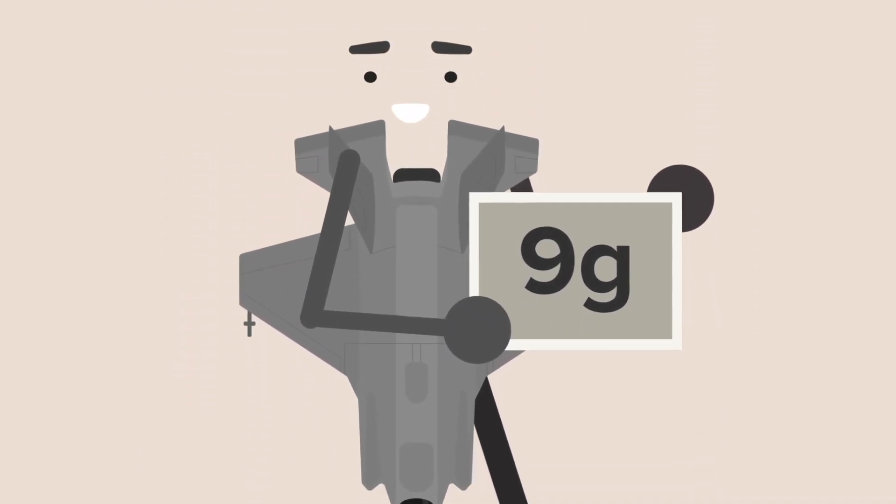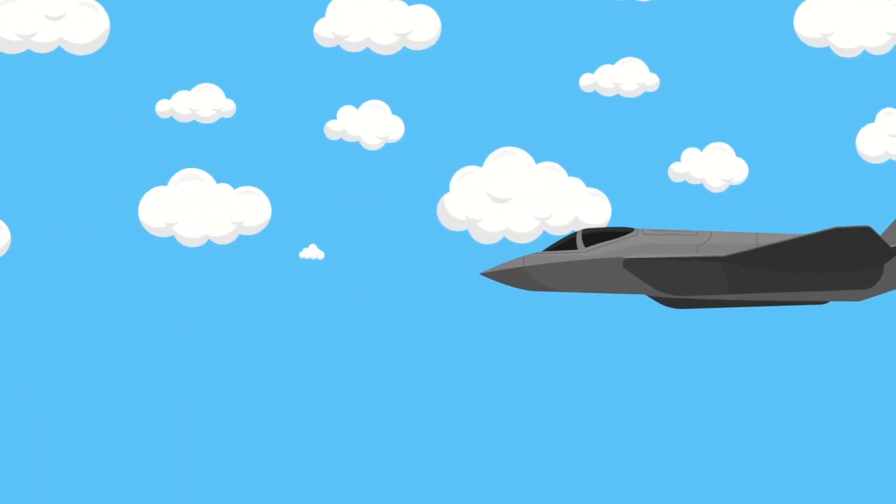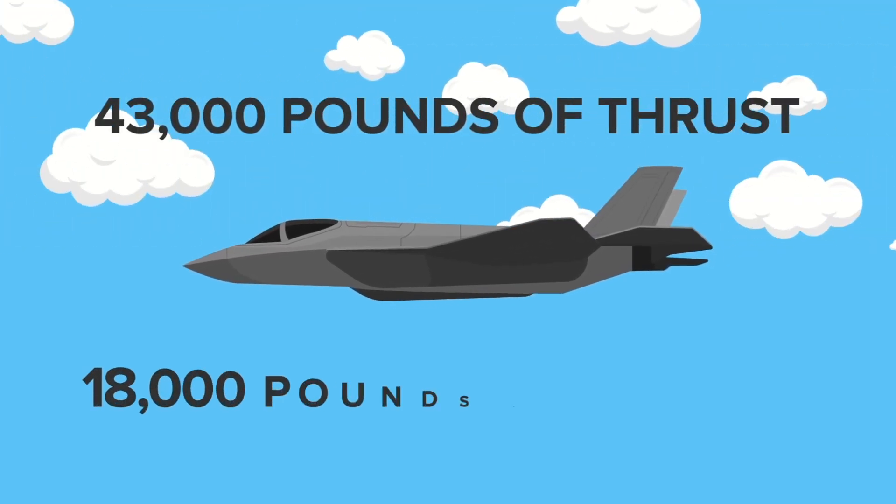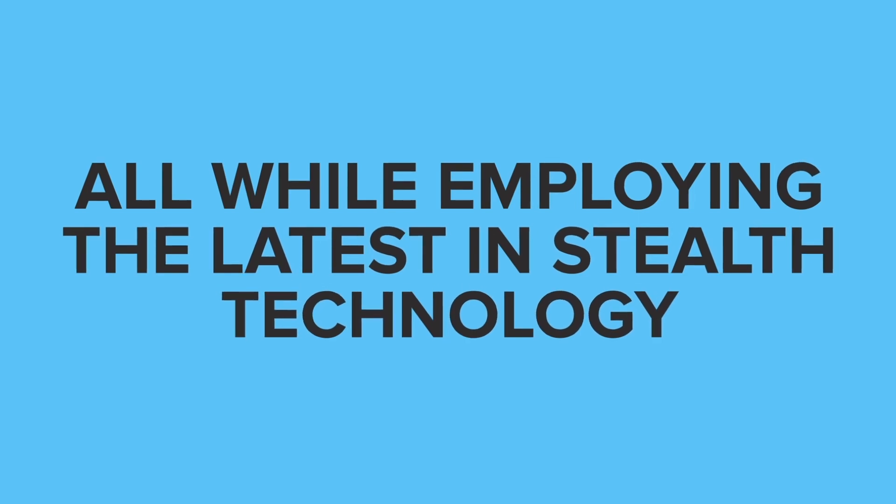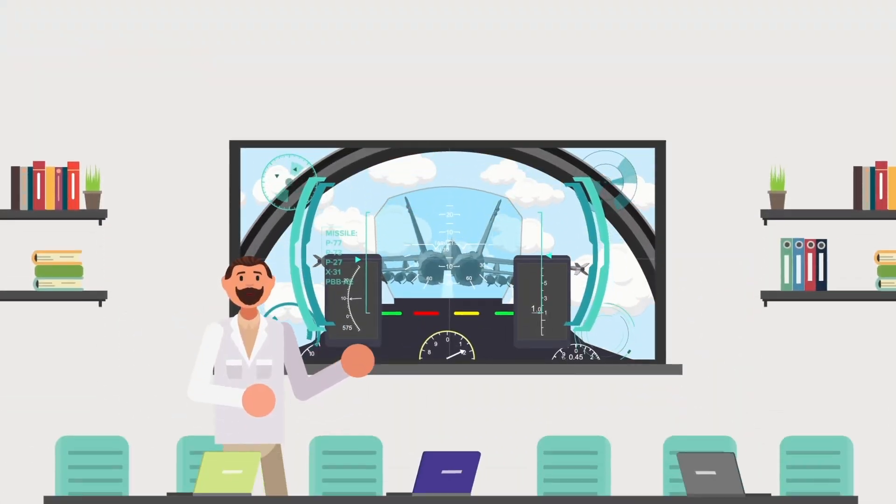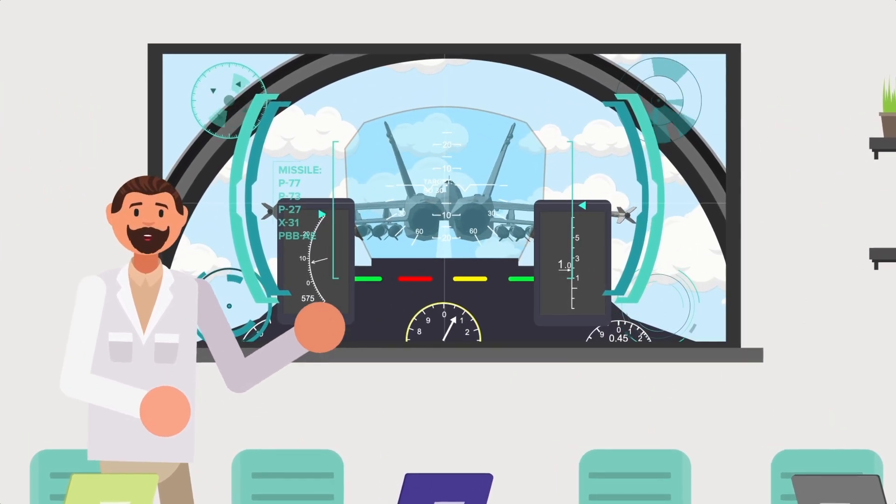It can withstand 9 G forces and has a maximum ceiling of over 50,000 feet. Its powerful engine produces 43,000 pounds of thrust, and it can carry 18,000 pounds of payload, all while employing the latest in stealth technology. The jet is manned by a single crew member and was designed to provide the pilot with unsurpassed situational awareness through an impressive advanced sensor package.